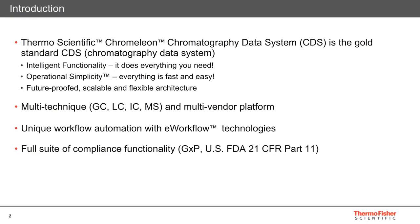Chameleon 7.2 is the first CDS to combine separation — that's gas chromatography, ion chromatography, and liquid chromatography — and mass spectrometry in an enterprise client-server environment. By extending Chameleon beyond chromatography into MS, you can now streamline your chromatography and MS quantitation workflows with a single software package. The MS support is focused on routine and quantitative workflows, which gives LC, GC, and IC-MS users access to the existing rich quantitative data processing and automation capabilities of Chameleon.